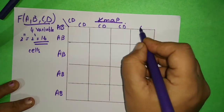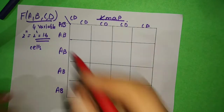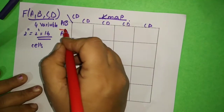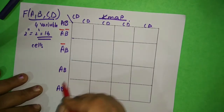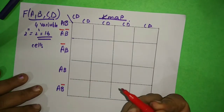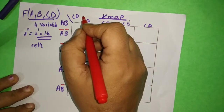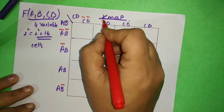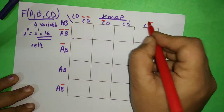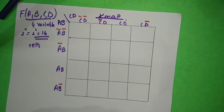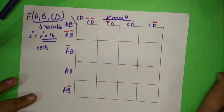So first it will be A complement, B complement. We are doing sum of products, so: A complement B complement, A complement B, A B complement. Then we have C complement D complement, and C complement then D complement. After this, you do the numbering.